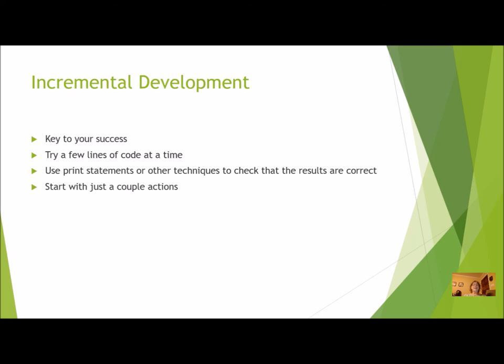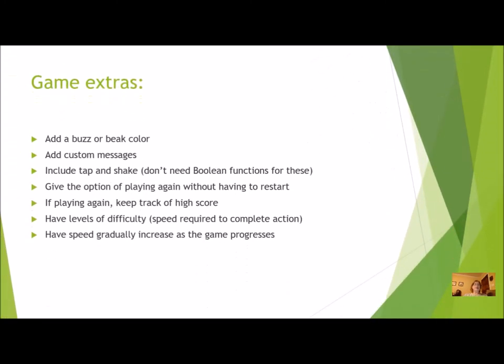Another recommendation with incremental development: start with just a couple of actions. Even though you'll have six or eight at the end, you don't have to start with all six. Start with just beak up and beak down, get a turn to work correctly with those two, and if you can do it for two then add two more — kind of like you did with Which Way, adding a bit at a time. This will really save you some frustration.